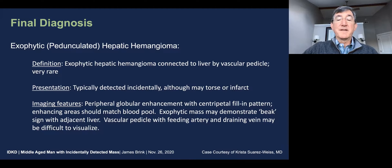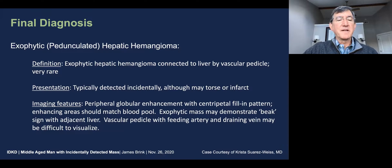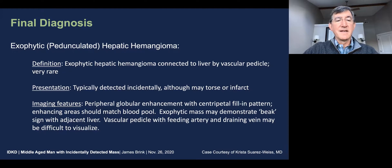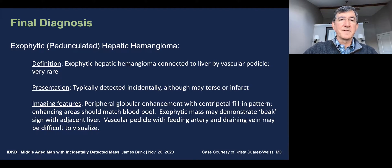Because of its exophytic nature, the mass may demonstrate the so-called beak sign with adjacent liver if it is closely opposed to the liver, and thus the adjacent normal parenchyma starts wrapping around the mass. The vascular pedicle with a feeding artery and draining vein may be difficult to visualize, but if one can confirm this pedicle, that of course confirms the diagnosis.